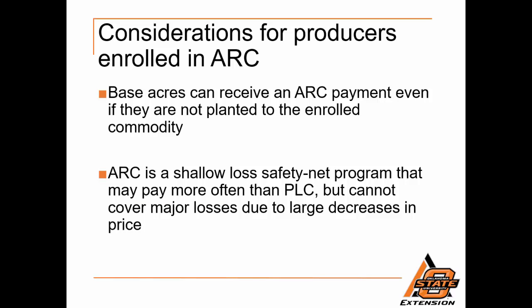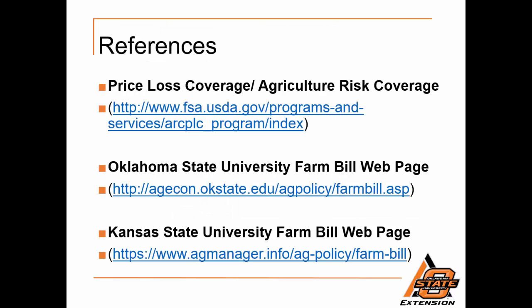Some considerations for producers enrolled in ARC: base acres can receive an ARC payment even if they are not planted to the enrolled commodity, as long as that producer is in ARC County. This could be important for producers who do not always take a crop to harvest, such as producers who graze off wheat or who plant a commodity not covered under the 2014 Farm Bill. Also, Agricultural Risk Coverage is a shallow loss safety net program that may pay more often than PLC — Price Loss Coverage — but cannot cover major losses due to large price decreases, given the 10% stop loss built into the program. For more information, please visit the websites listed on this page or contact your local county extension agent.